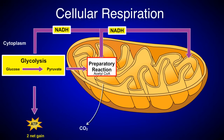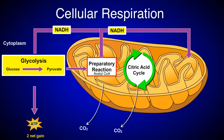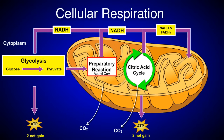In stage 3, the citric acid cycle, the remaining carbons from the initial glucose are oxidized, releasing carbon dioxide. NADH and FADH2 are also produced, in addition to two ATP molecules.